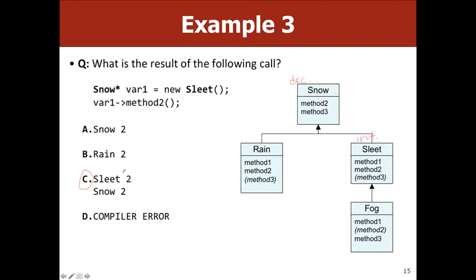A student confirms: even though the variable is declared as snow, when you call method2 it knows it's a sleet. Yes — that is polymorphism. That's it.